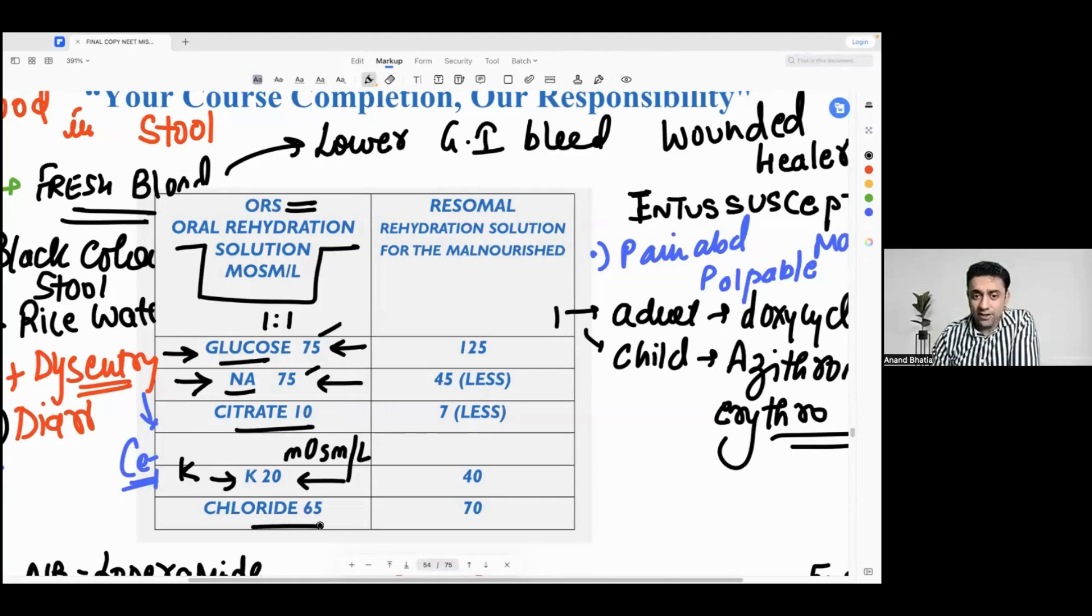There is also something known as ReSoMal - RE for rehydration, SO for solution, MAL for malnourished. It is rehydration solution for the malnourished, means for the SAM baby. We have a different way of preparing the ORS.